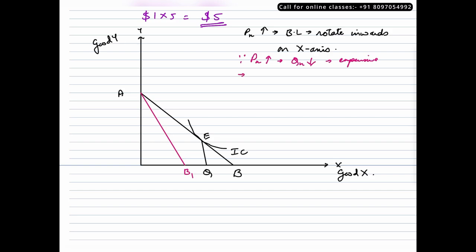However, Slutsky says the consumer will buy initial combination. And what are we doing? We are increasing his money income. When income increases, what happens? The budget line will shift parallel outwards. It will shift outwards parallel to this budget line, which is AB1.